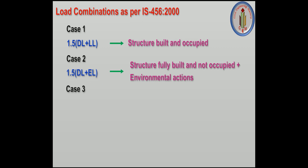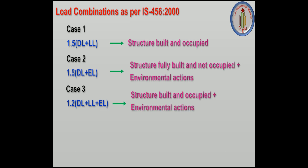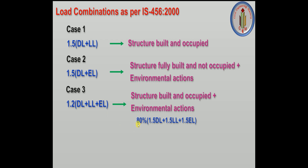Case 3 — 1.2 times Dead Load plus Live Load plus Earthquake Load — applies when the structure is built, occupied, and subject to environmental actions. All three load types are considered. You might wonder why 1.2 instead of 1.5. Since we have three loads, we consider 80 percent of each — 80% of 1.5 gives a common factor of 1.2.